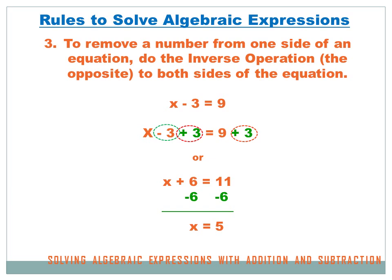The third rule is: to remove a number from one side of an equation, do the inverse operation — the opposite — to both sides. If I've got x minus 3 equals 9, I want to get rid of that minus 3 so I have just x on the left side. The opposite of subtracting 3 is adding 3, so I add 3 to both sides. I then have x minus 3 plus 3 equals 9 plus 3. The plus 3 and minus 3 cancel each other out and you have x equals 12.